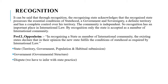Recognition can be of three types. The first is state recognition — when a new state is formed and has certain qualities like territory, government, population, and habitual submission, then the international community or already-recognized states must recognize that new state. The second is governmental recognition — if a state designs a new governmental structure, it needs to build relations with other countries and requires recognition from the international community that they accept that particular governmental structure.